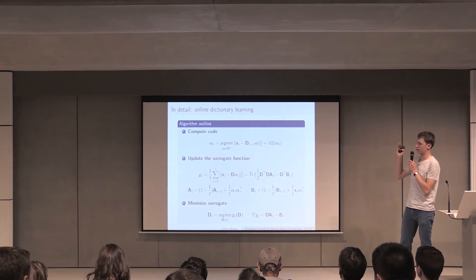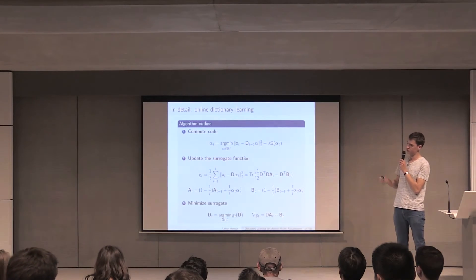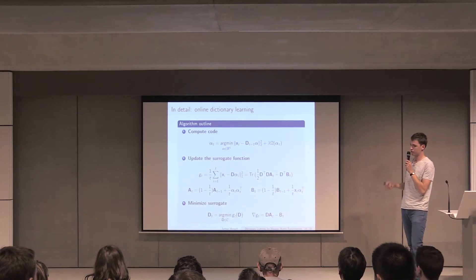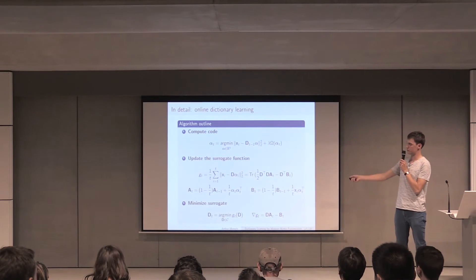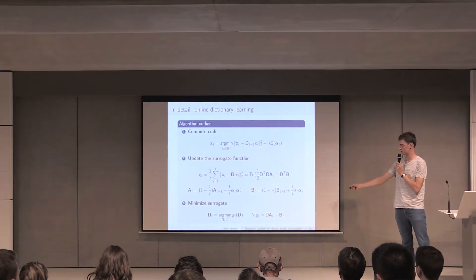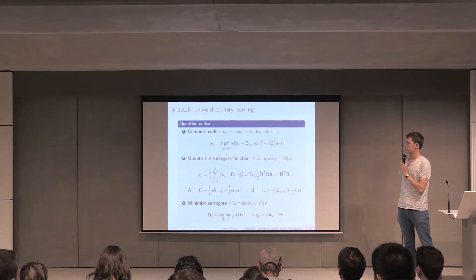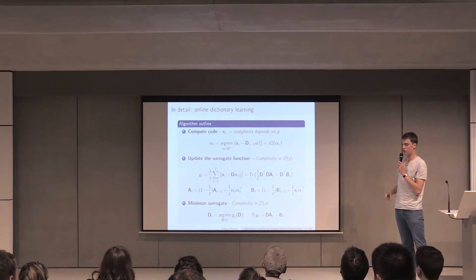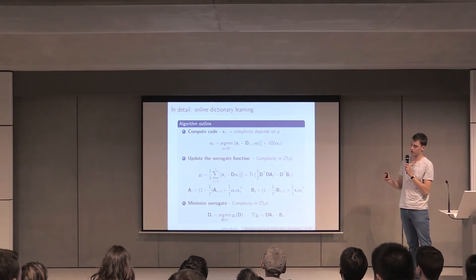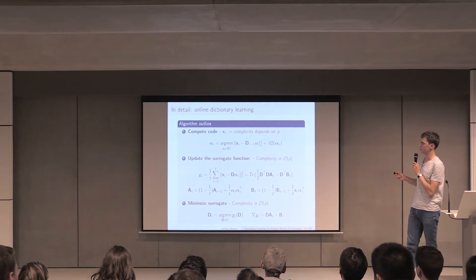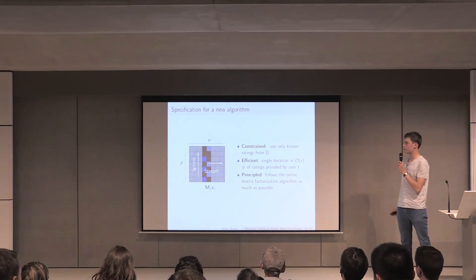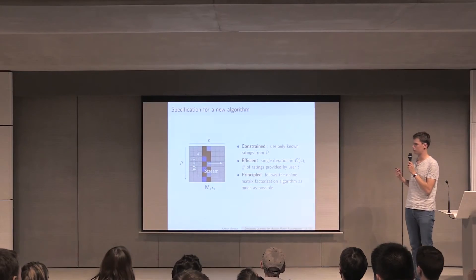At each iteration what you do first is to compute the code using the present dictionary D. The code is basically the coefficients that are used to reconstruct your column X_t. Using this code you update the surrogate function we talked about, which is actually parameterized by two sufficient statistics, A_t and B_t. Using these statistics you minimize your surrogate, which you can do because the gradient has a nice form that you can see here. All of these three steps have a complexity that depends on the dimension of sample P. This is a problem in collaborative filtering, because we want to depend only on the number of seen ratings that are provided.